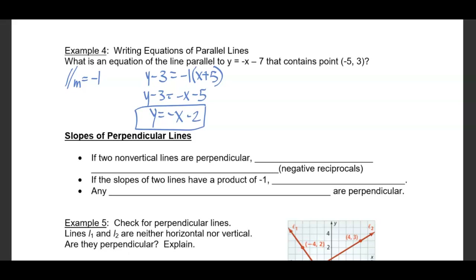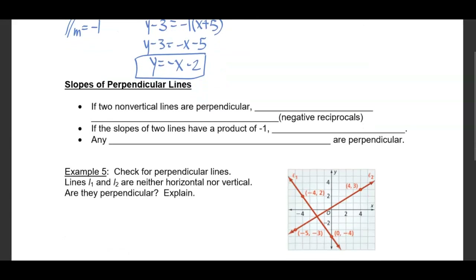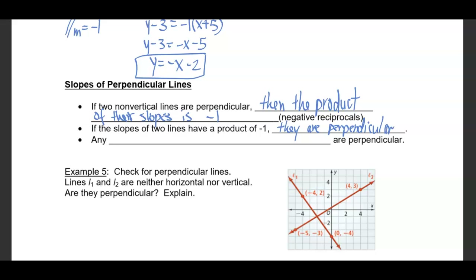Now we move into perpendicular lines. Slopes of Perpendicular Lines: If two non-vertical lines are perpendicular, then the product of their slopes is negative 1. If the slopes of two lines have a product of negative 1, then they are perpendicular. Any horizontal line and vertical line are perpendicular.